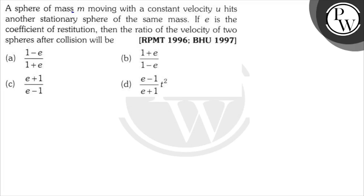So here in this problem, a sphere of mass m is moving with constant velocity u, hits another stationary sphere of the same mass. If e is the coefficient of restitution, we need the ratio of the velocity of the two spheres after the collision.